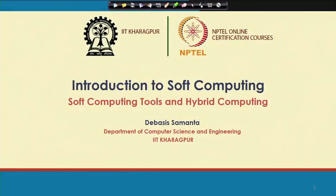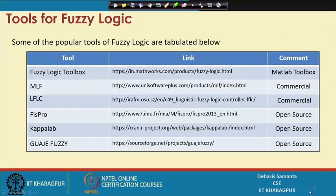We are almost at the end of this online NPTEL course on Introduction to Soft Computing. This is the final lecture. In this final lecture, we will learn about the different tools available to solve problems using the different soft computing techniques we have covered in this course. We have covered mainly three soft computing paradigms: fuzzy logic, genetic algorithm, and neural network. The plan of this lecture is to cover the different tools available in the market, their applications, and finally, some hybridization approaches.